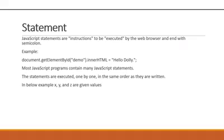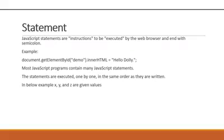First, I want to explain what a statement is. Statements are instructions that will be executed by the web browser and end with a semicolon. For example, this is an example of a statement: document.getElementById('Demo').innerHTML = 'Hello Daily'. This ends with a semicolon, so this is an example of a JavaScript statement. Most JavaScript programs contain many JavaScript statements; it rarely happens that we have only one statement in a program.